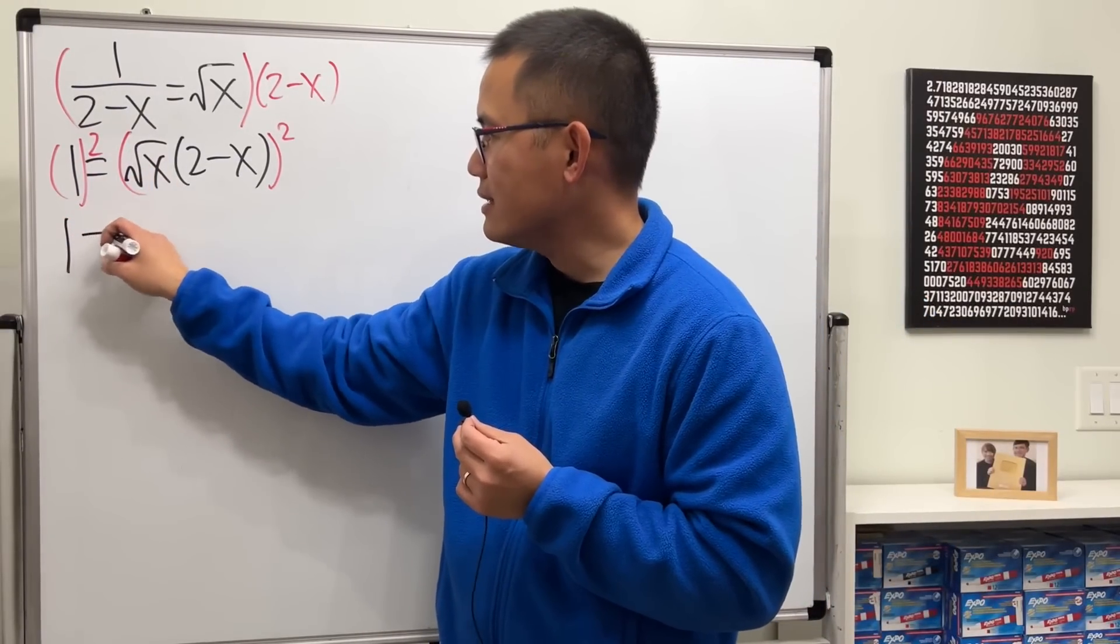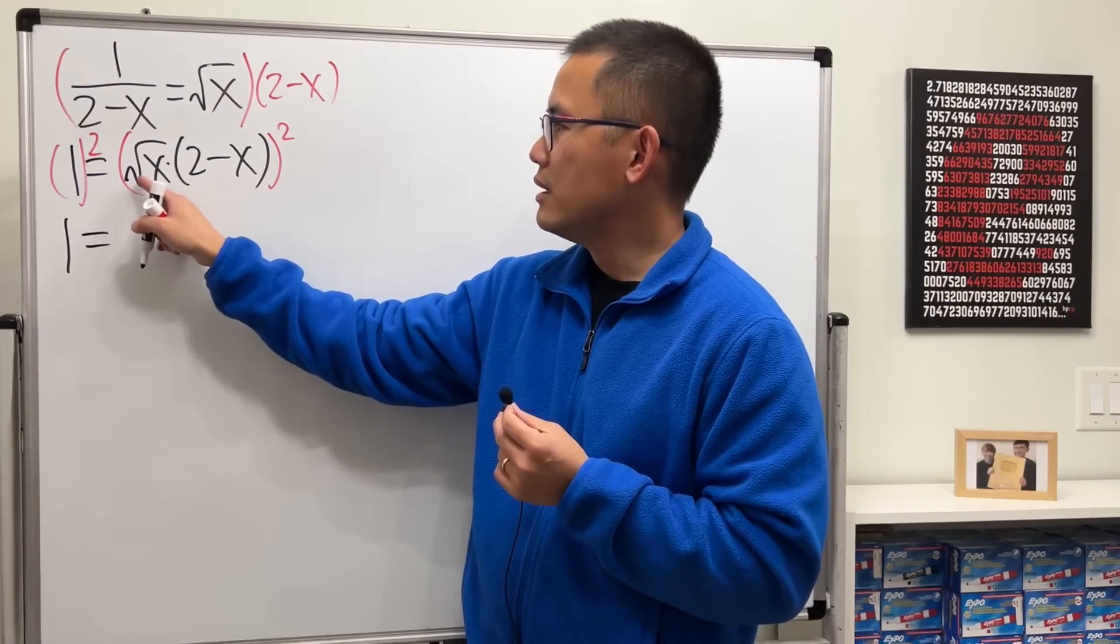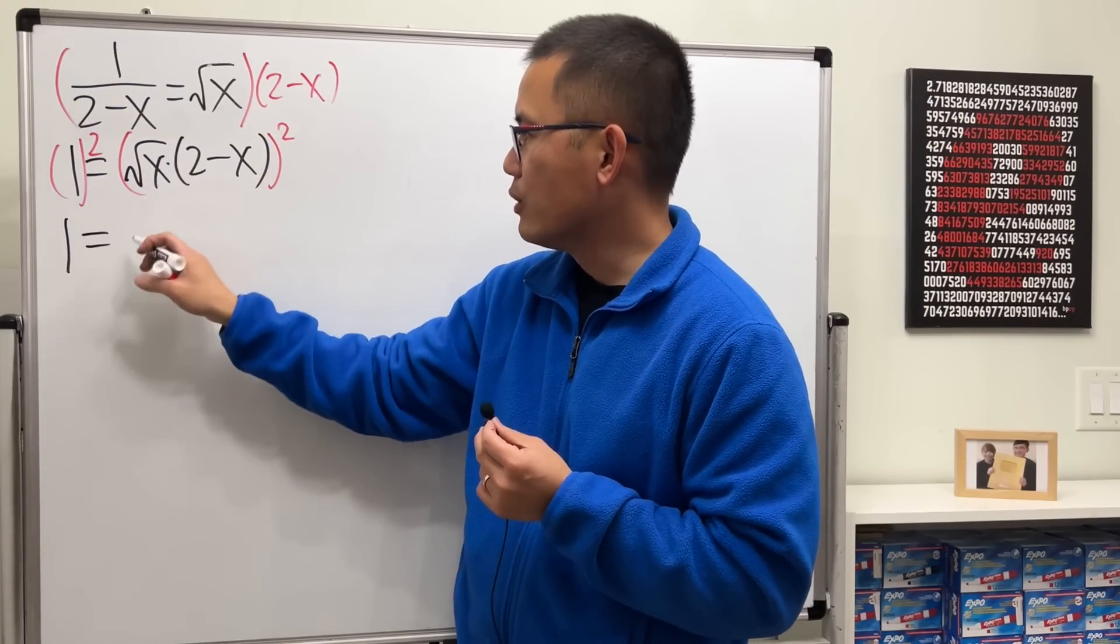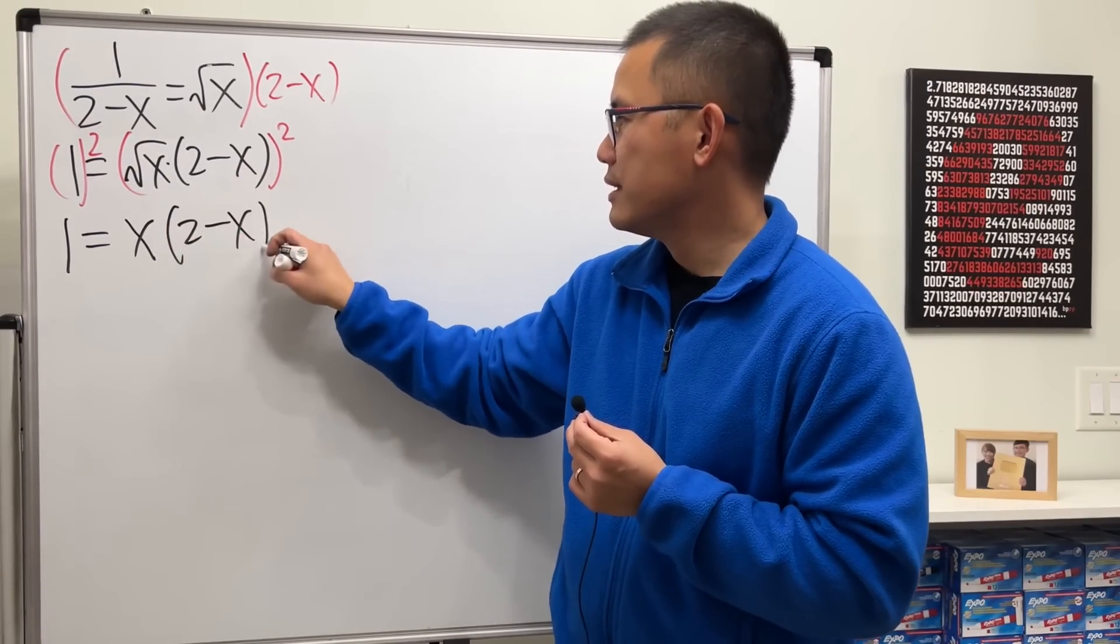But anyways, on the left-hand side, we have 1. This is a multiplication, so we can kind of like distribute the power. Square root, square cancel, so we just have x. And then we have 2 minus x squared.